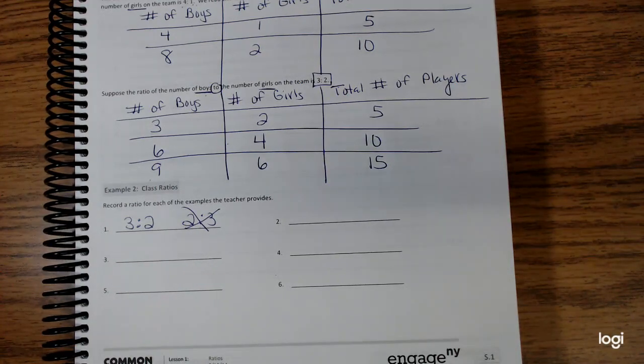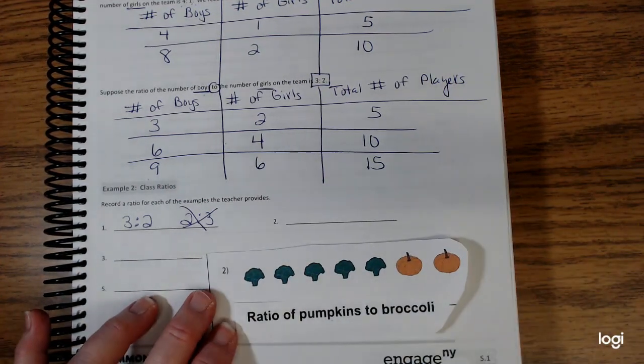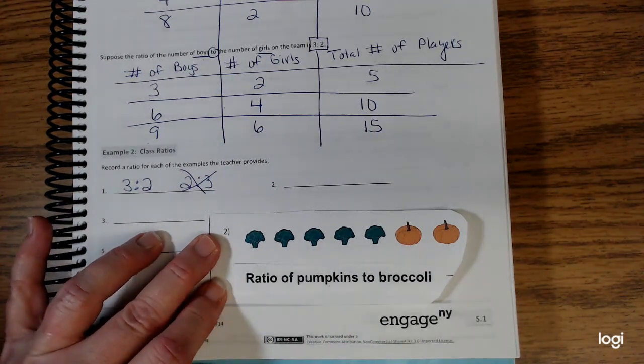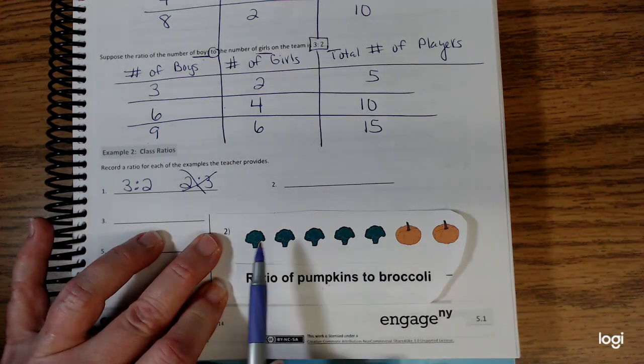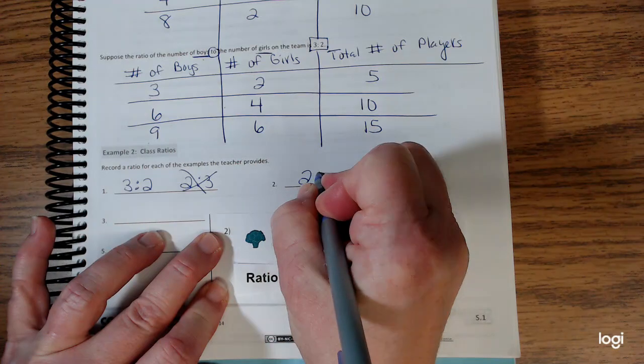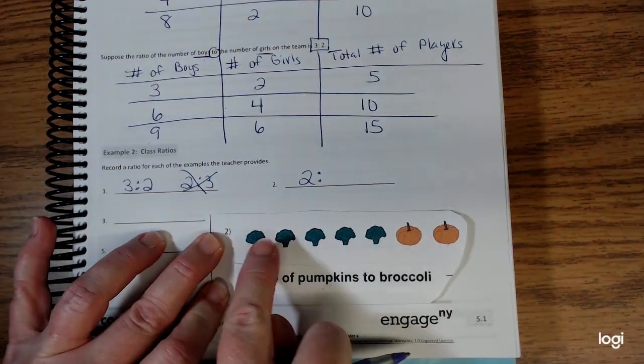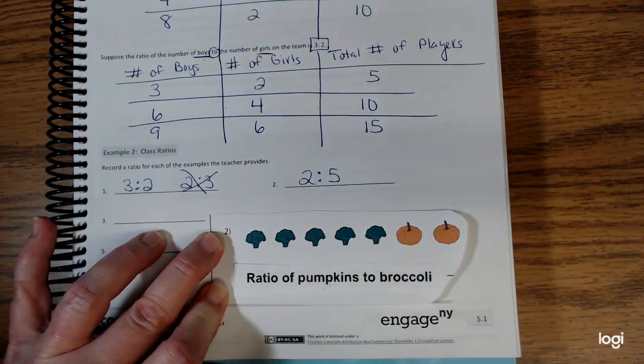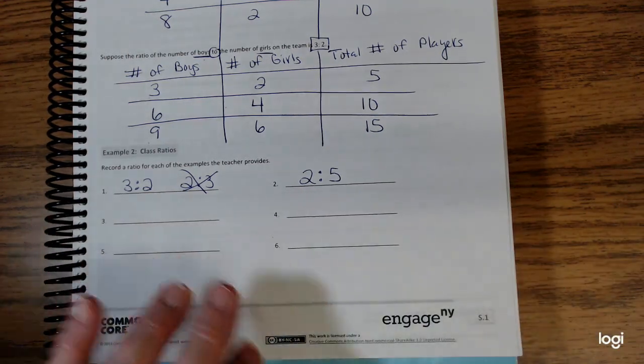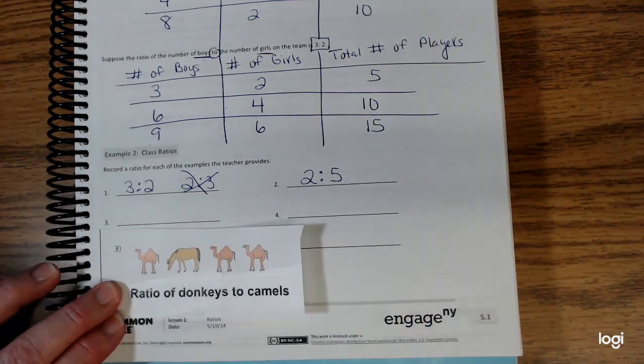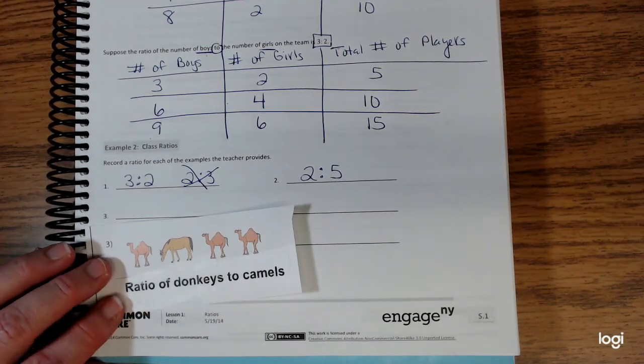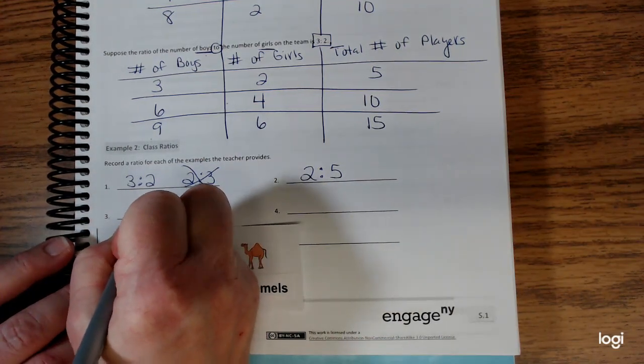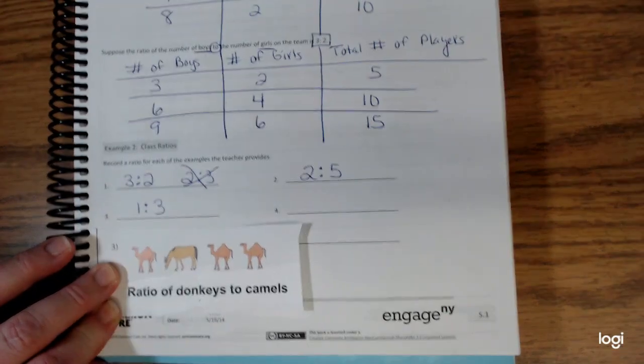Second problem: the ratio of pumpkins to broccoli. You look carefully at the picture. The word pumpkins is listed first, so you need to count the pumpkins first. Broccoli second: 2 to 5. No words, remember, ratios are just numbers. Let's look at number three: donkeys to camels. Look carefully at my picture. The number of donkeys would be one, camels would be three.